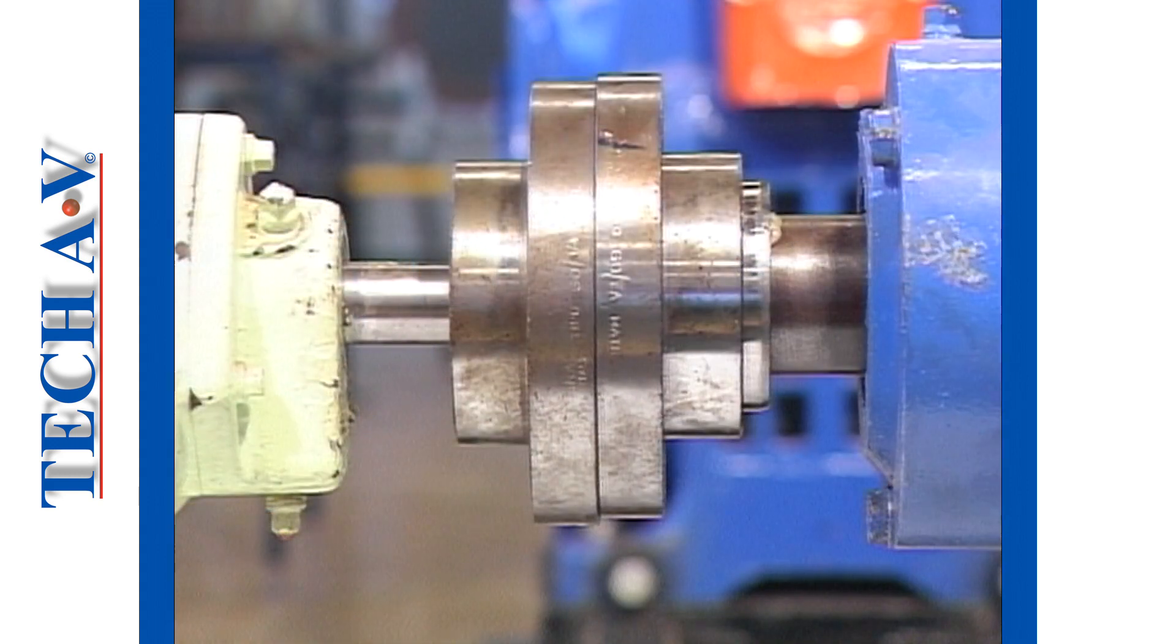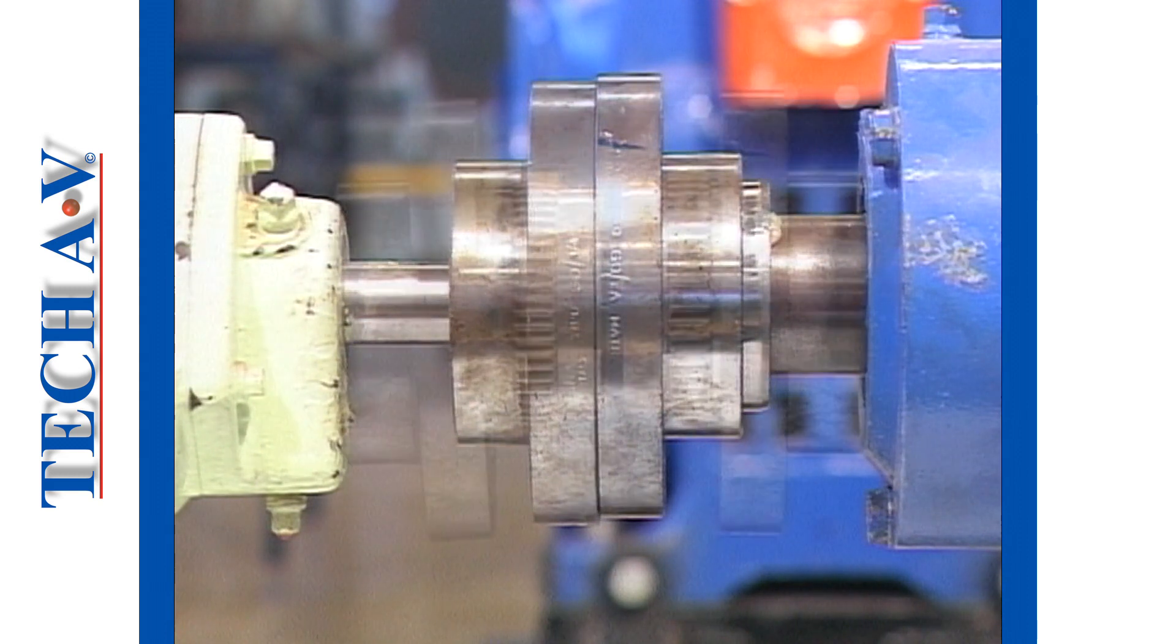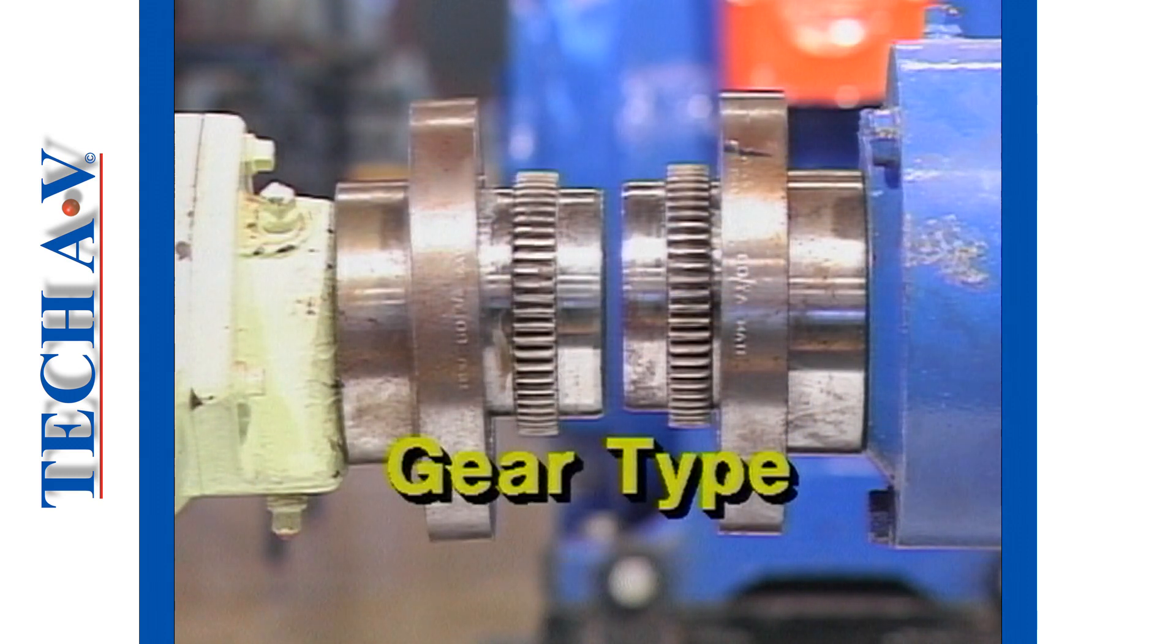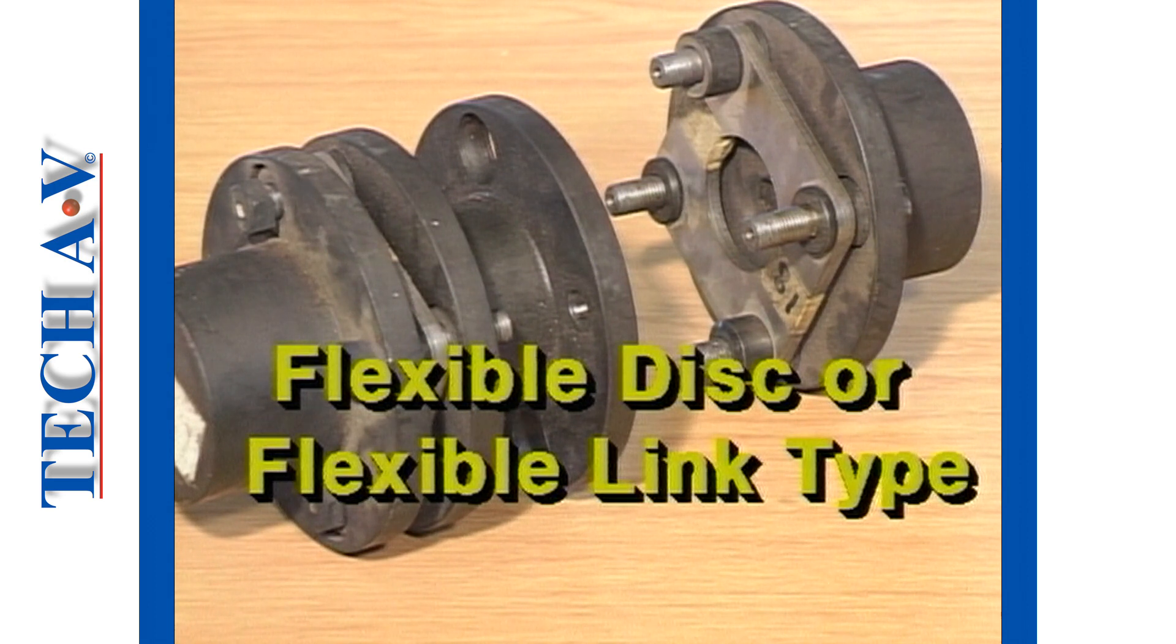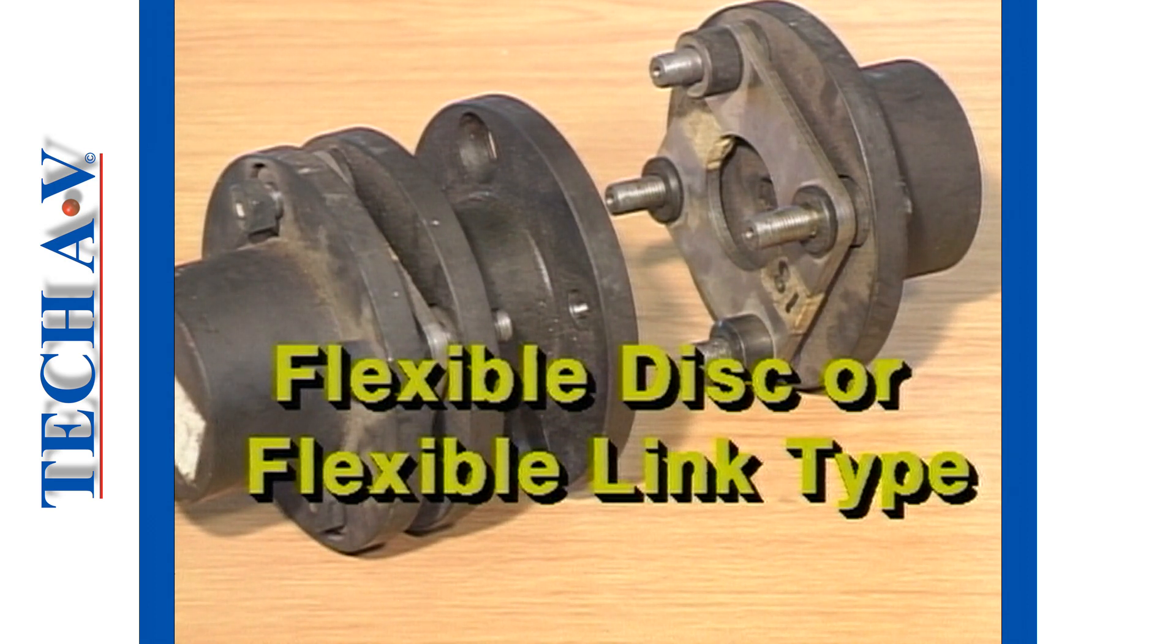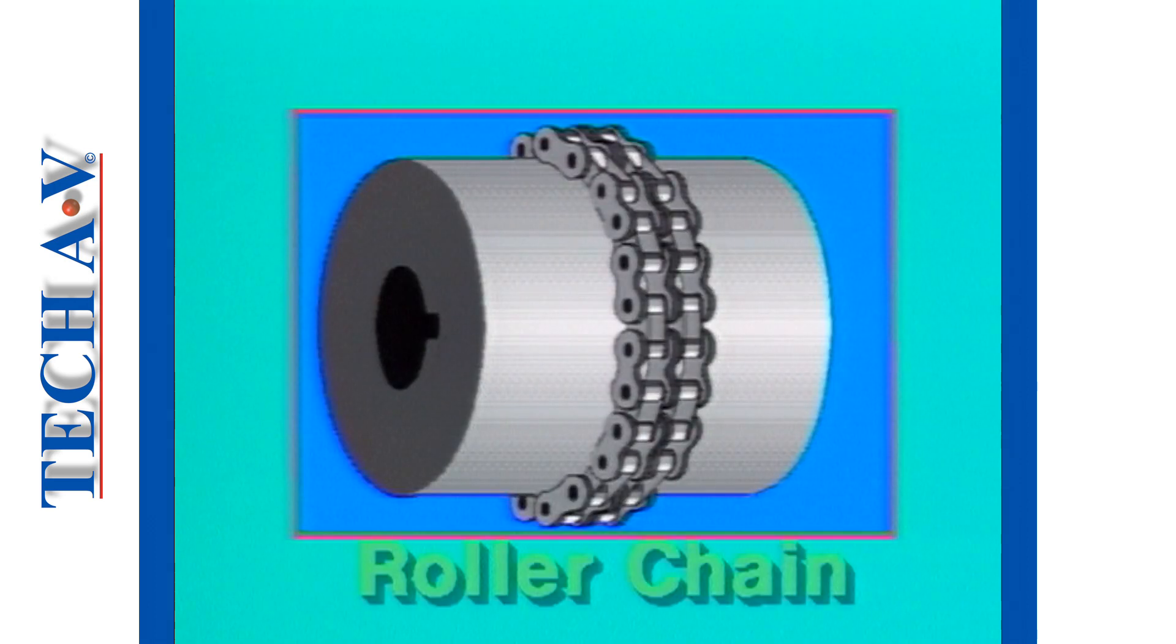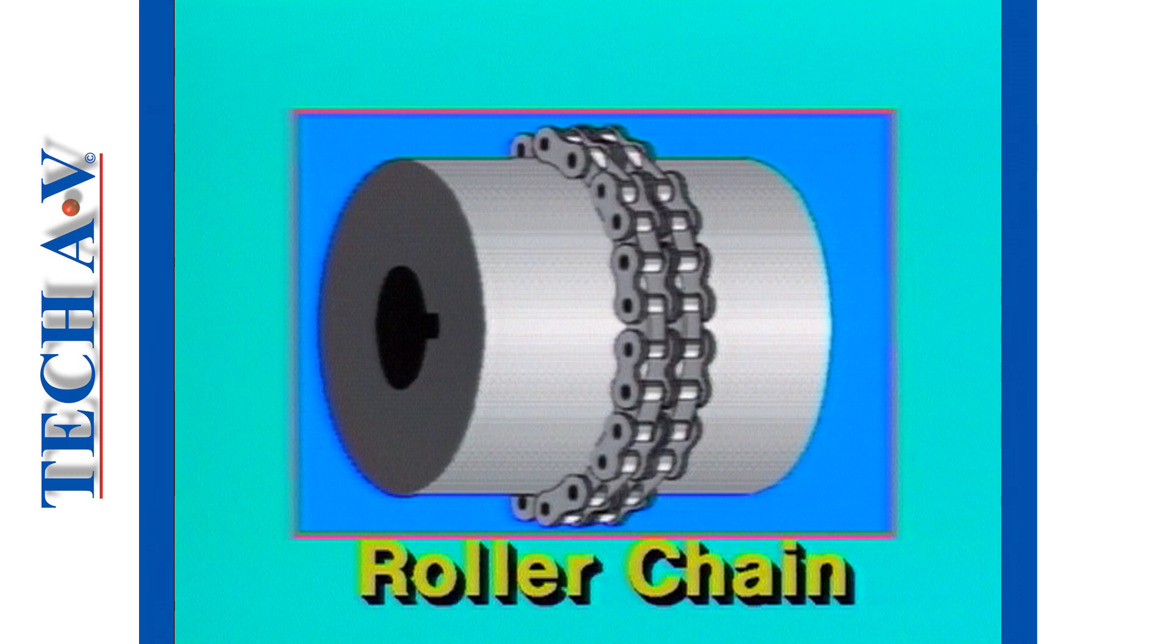Some of the more common types of flexible couplings include gear type, steel grid, popularly called a bibi type, flexible disc or flexible link types, and roller chain types.